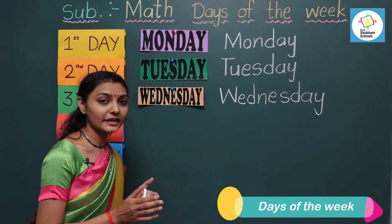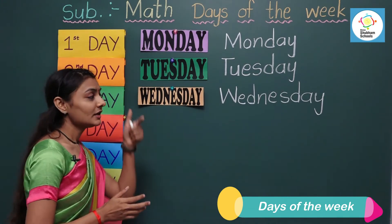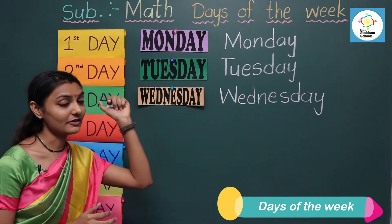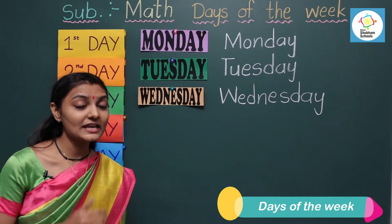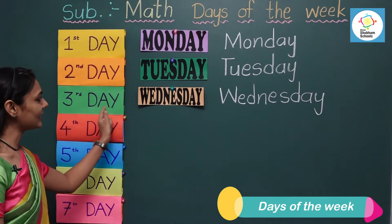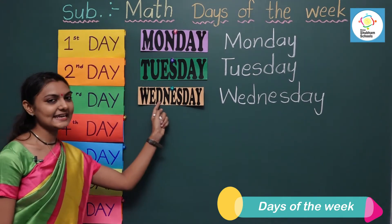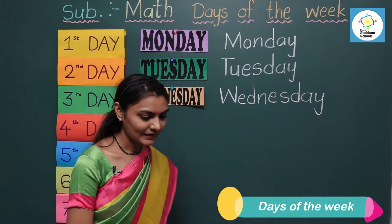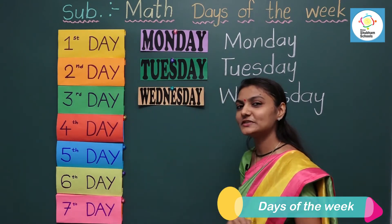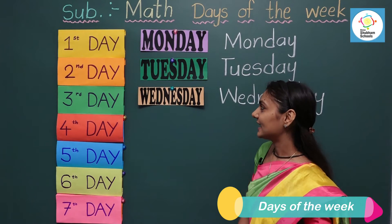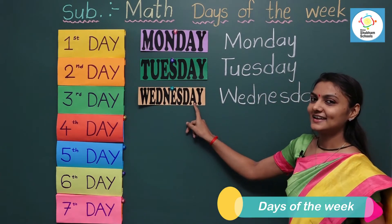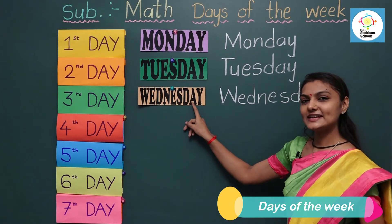Now if Tuesday is the second day of the week, can you tell me which day is the third day of the week? The third day of the week is Wednesday. Can you tell me which day comes after Tuesday? It's Wednesday.